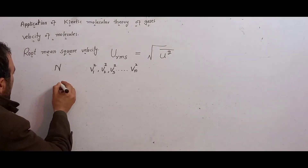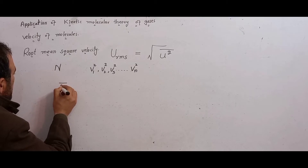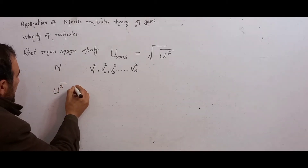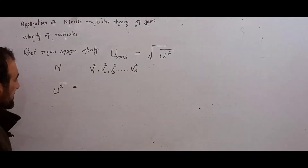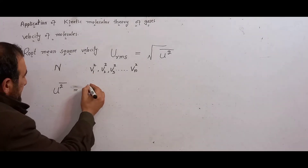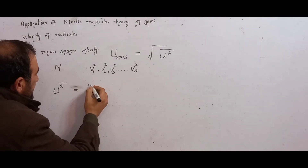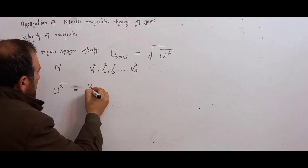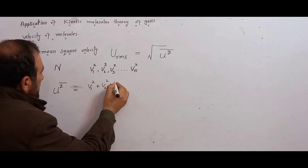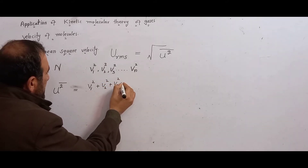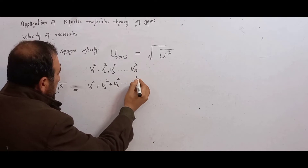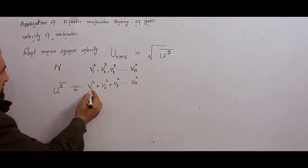Now we want to find mean square velocity. To find the mean square velocity, we calculate the average — to find the average, we add all the values together: v1² + v2² + v3² + ... + vn², then divide by n, the number of molecules.